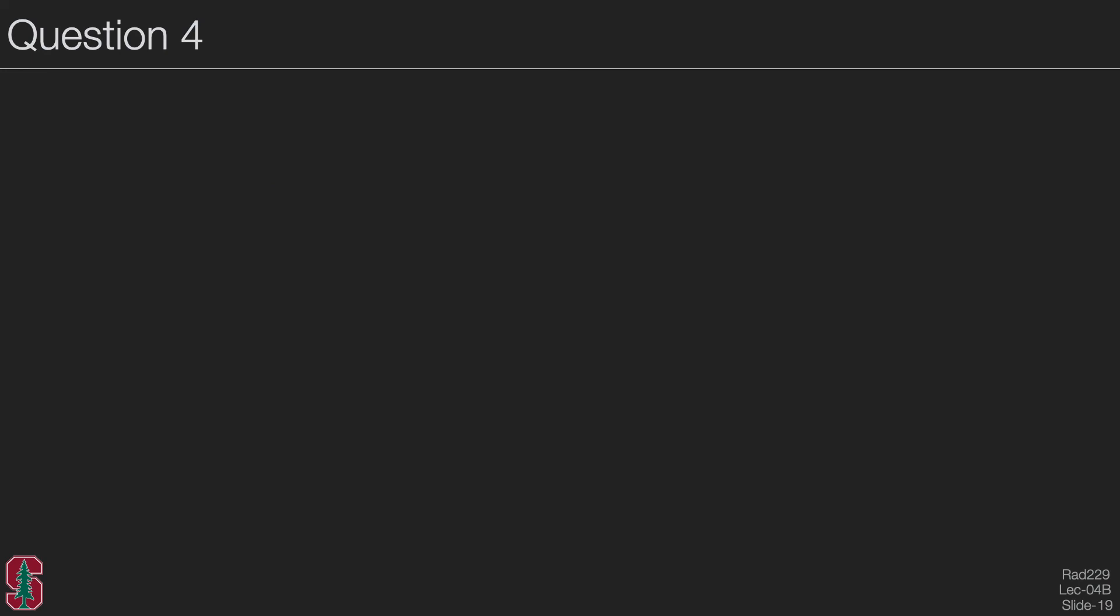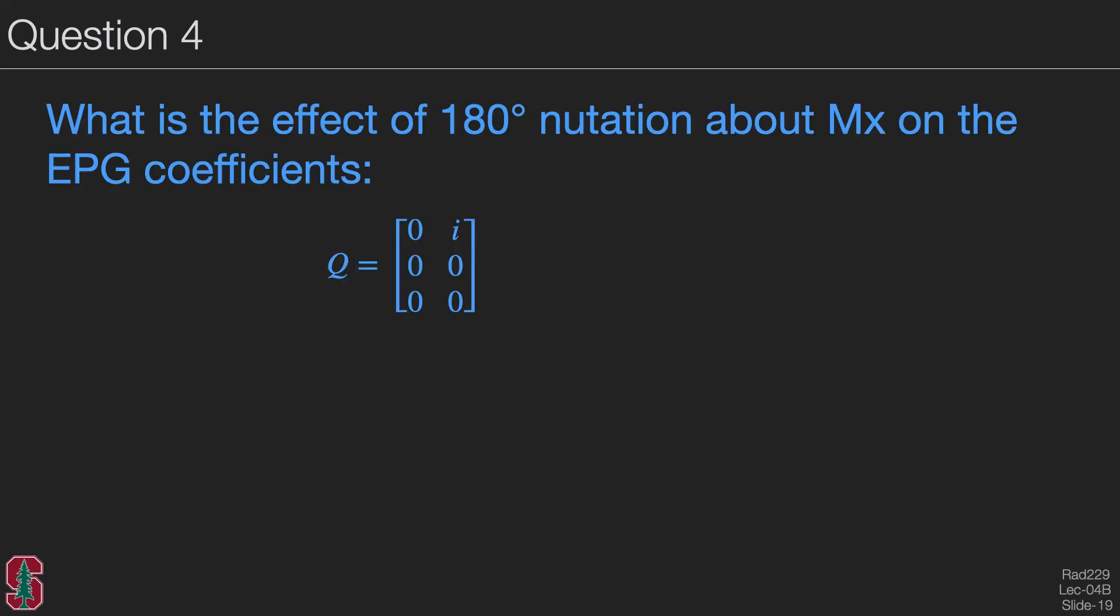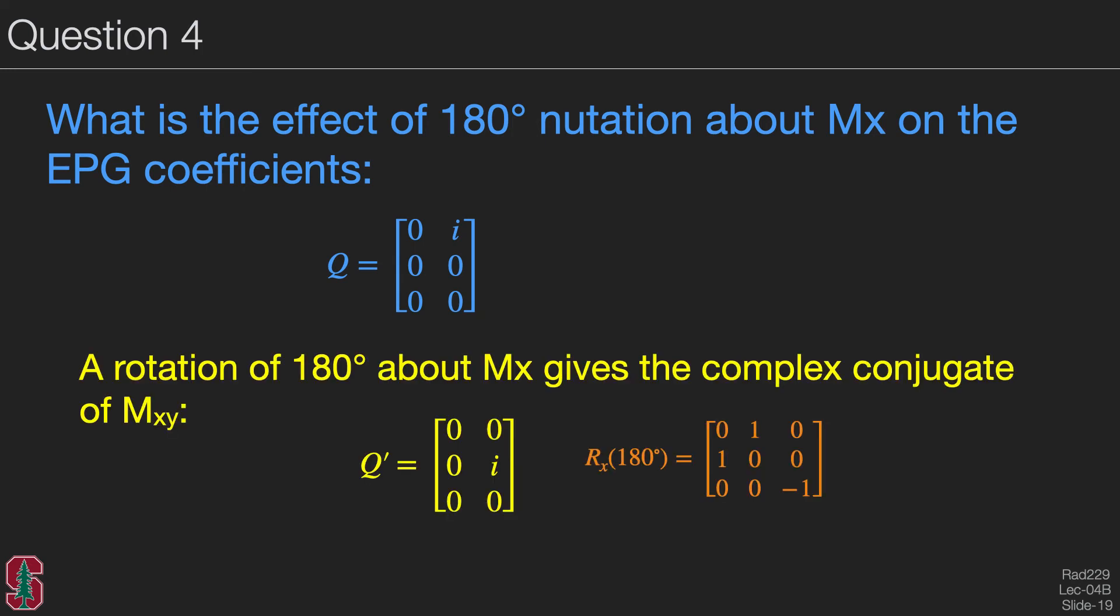Let's look at another question. What is the effect of a 180 degree notation about MX on the EPG coefficients? Here we see that a rotation of 180 degree about MX gives the complex conjugate of the magnetization. And this is achieved by simply swapping the F plus sub n and the F minus sub n coefficients. You can also see this from the rotation matrix.